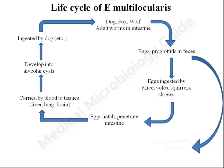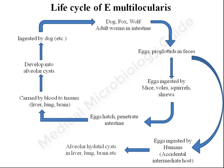Similar to other intermediate hosts, eggs ingested by humans will hatch and the oncosphere will reach the tissue, where the alveolar hydatid cyst will develop. The infection among human beings is a dead end, as the disease cannot be transmitted from man to the definitive host like foxes, wolves, or dogs.